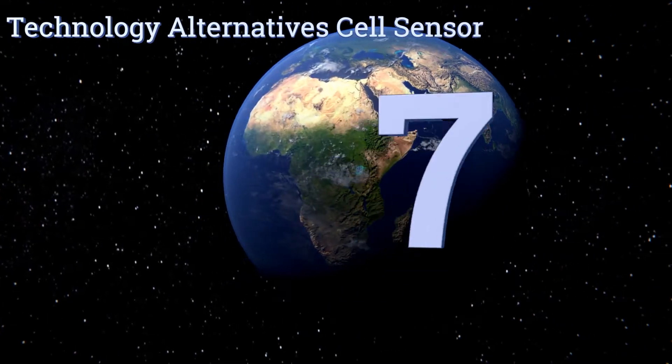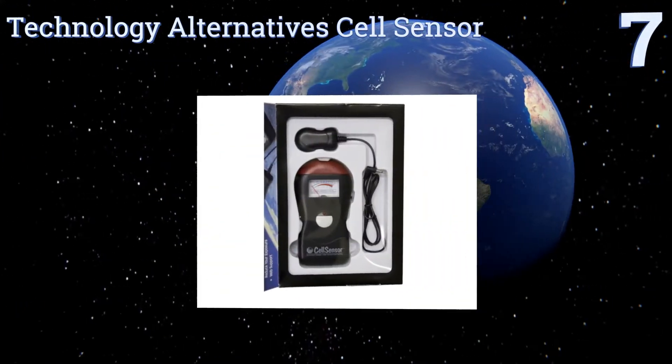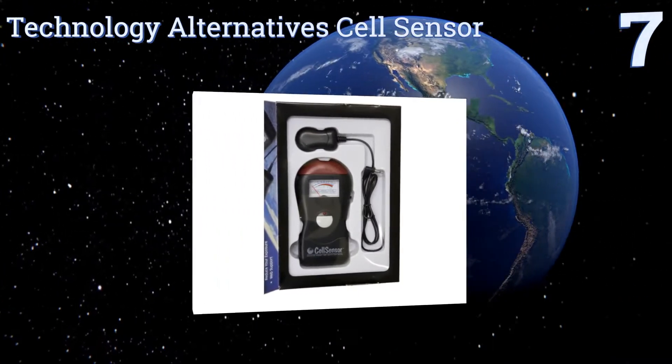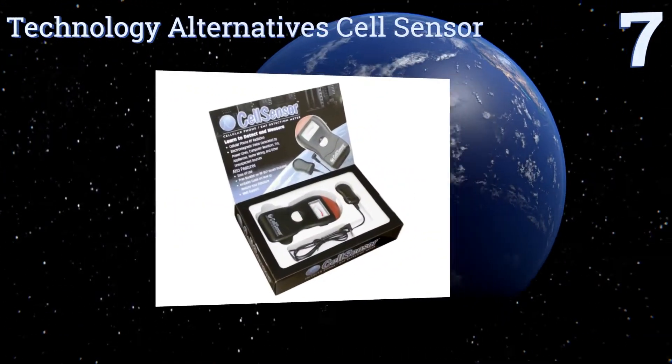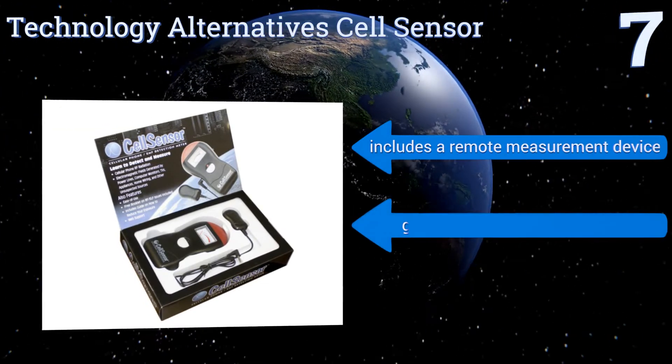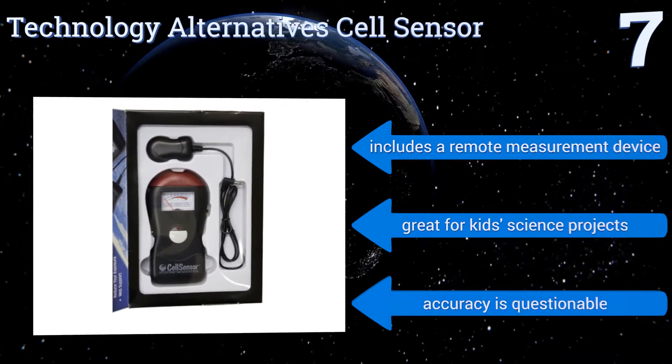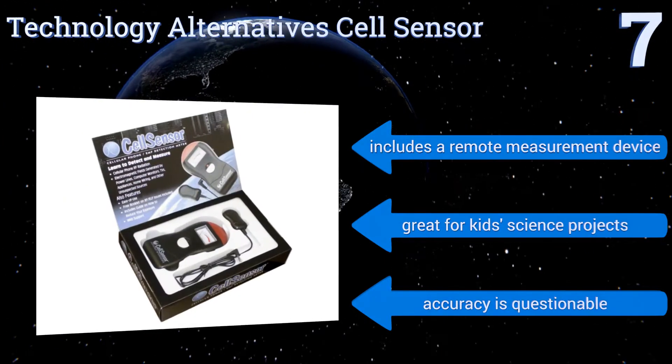Starting off our list at number 7, the Technology Alternative Cell Sensor is a great tool for those concerned about the potentially hazardous effects of cell phone radiation. It detects even the smallest waves emitted by your devices, so you know what you're exposed to. It includes a remote measurement device and is great for kids' science projects, but its accuracy is questionable.